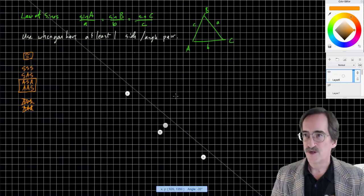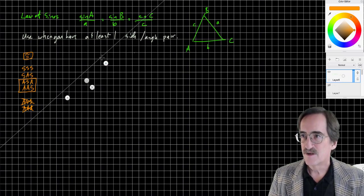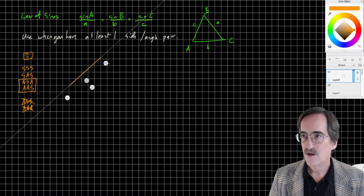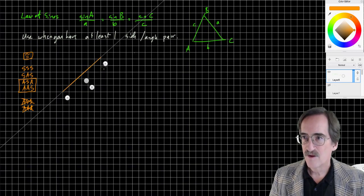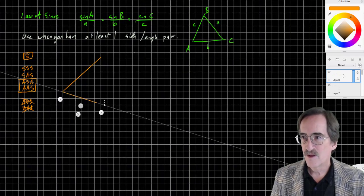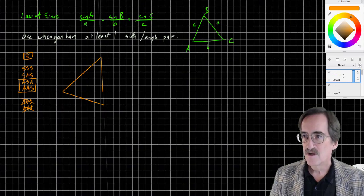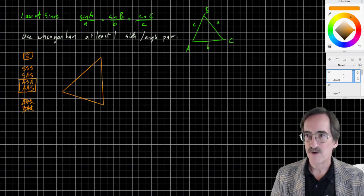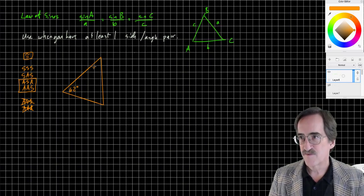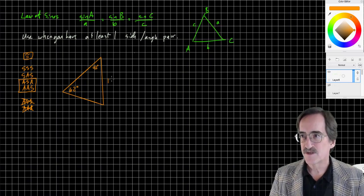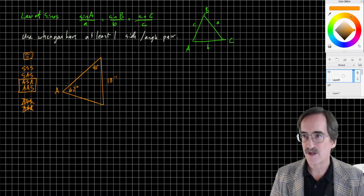Let's draw a non-right triangle. I'm just drawing generic triangles to get things straight. Let's say I happen to know this is 62 degrees, and I happen to know this is 42 degrees, and I happen to know this side is 18 inches. And I want to solve the triangle, so I'd like to find the rest of the sides and angles.